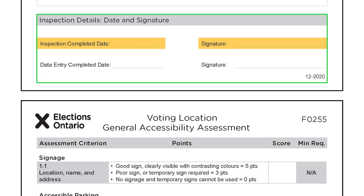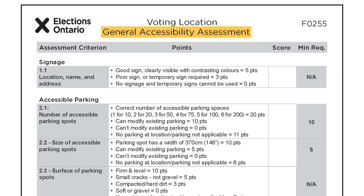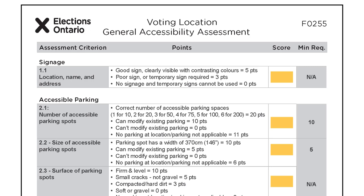The next step is to assess the voting location for accessibility. There are seven categories to review. You will evaluate each item for accessibility and assign a score based on the description in the points column. If the criteria score exactly meets the minimum points indicated, you must indicate which remediation product is required and specify the quantity in the remediation products table.